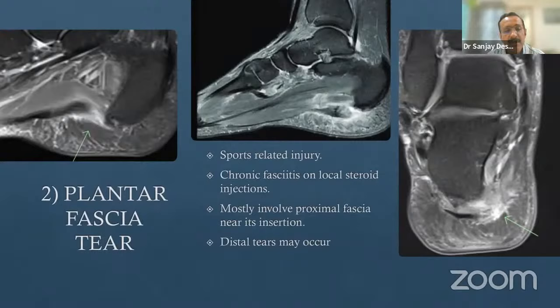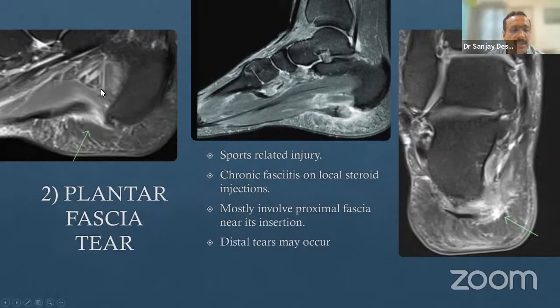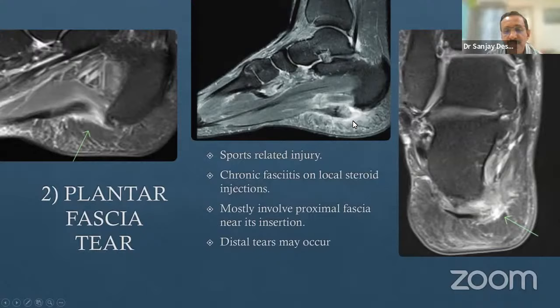The plantar fascia can also be torn, either due to one episode of acute trauma or multiple micro-stress injuries. In the latter, the plantar fascia first degenerates, and this degenerated fascia is not strong enough to resist repetitive micro-trauma, leading to tear. On MRI, an acute tear shows a relatively normal but torn plantar fascia at the calcaneal attachment, while a degenerated tear shows thickening, hyperintense signal, and retraction—indicating prior degeneration before tearing.